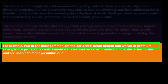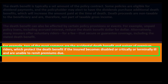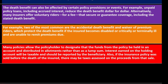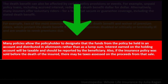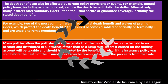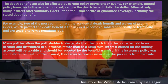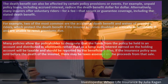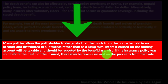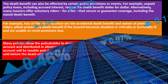Two of the most common riders are the accelerated death benefit and waiver of premium riders, which protect the death benefit if the insured becomes disabled or critically or terminally ill and is unable to remit premiums. Many policies allow the policyholder to designate that funds be held in an account and distributed in allotments rather than as a lump sum. Interest earned on the holding account will be taxable and should be reported by the beneficiary, since the funds continue earning money after the point of death.